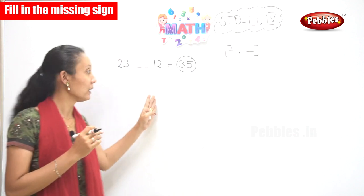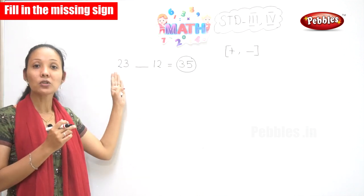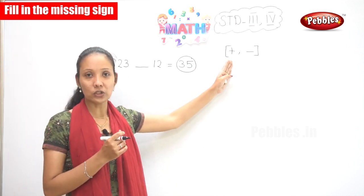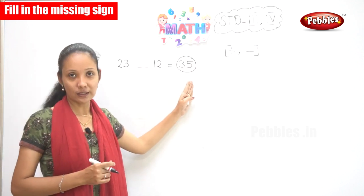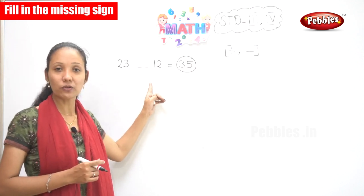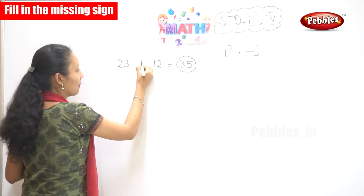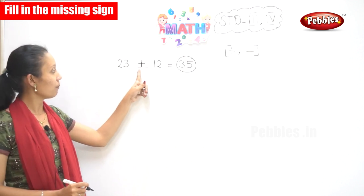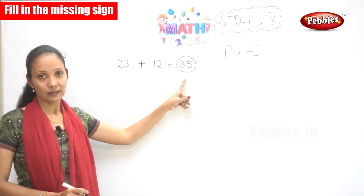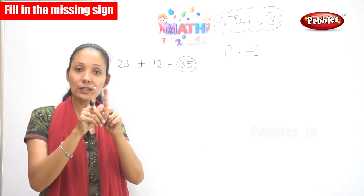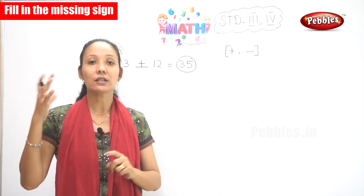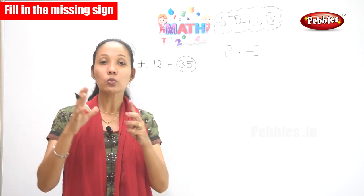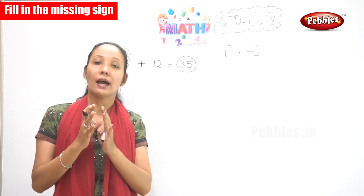So what will be the sign here? Yes, it is plus! 23 plus 12 equals 35. So what is the correct sign? It is plus. You see, when you add two numbers you get a greater number, isn't it? You will get extra — a bigger number.